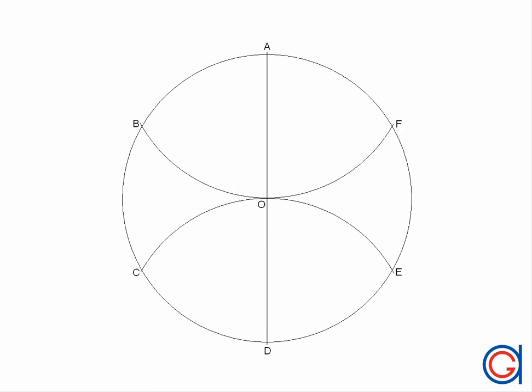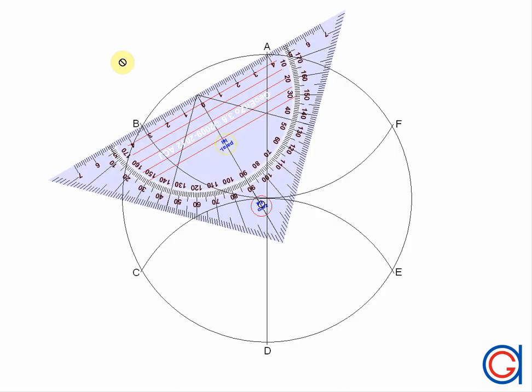As can be seen, our two arcs pass through our center point O. So now we have the six vertices of our regular hexagon inscribed in a circle.